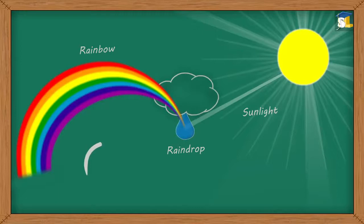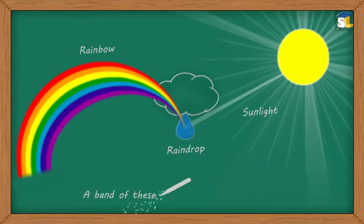Sunlight, or white light, consists of many colors. However, only a few of them are visible to us. A band of these visible colors is called a visible spectrum.